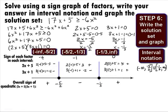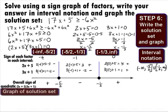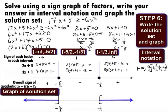Last, we need to graph this. The graph will look like the interval notation: a boxed end at negative 5 halves with shading everything to the left, and a boxed end at negative 1 third with shading everything to the right, for our final answer.